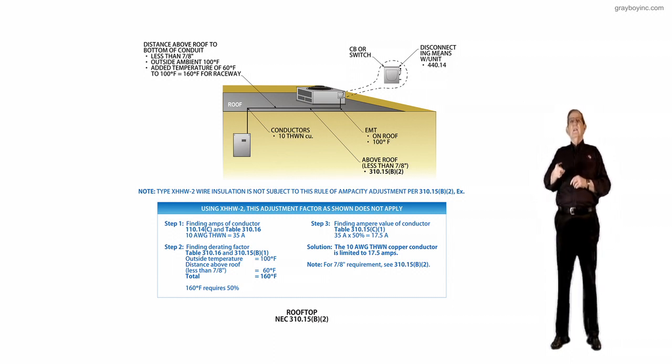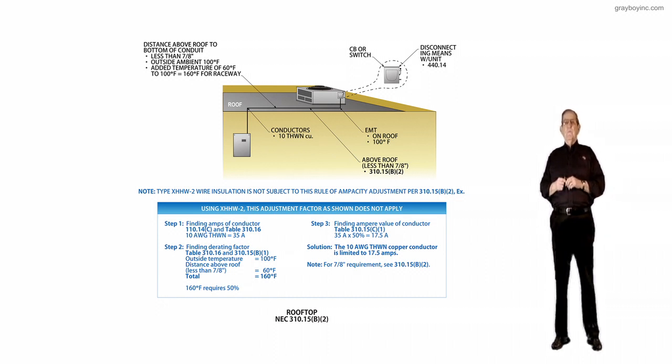Now let's look at it where you're less than 7 eighths of an inch from where the conduit sits on the roof. Step one, you go to table 110.14C, table 310.16, and a number 10 THWN is 35 amp out there in a wet location. That's considered by 300.9B a wet location.